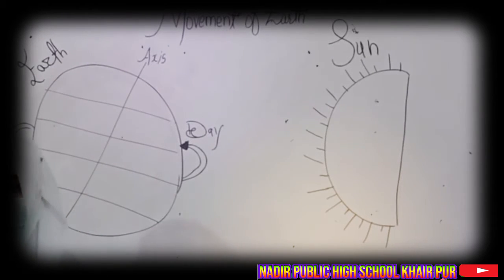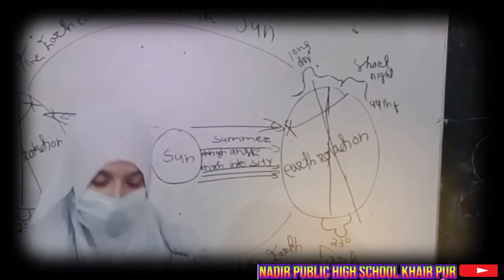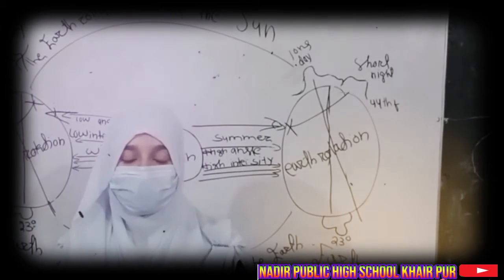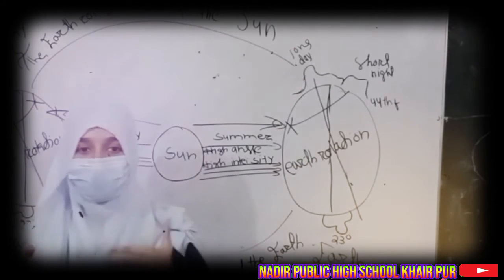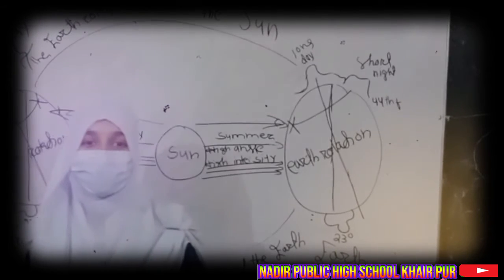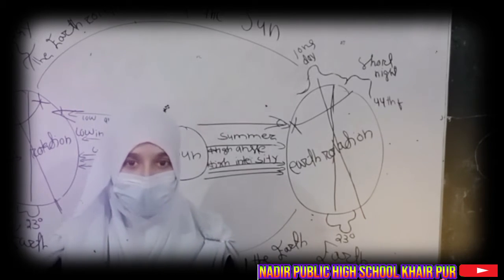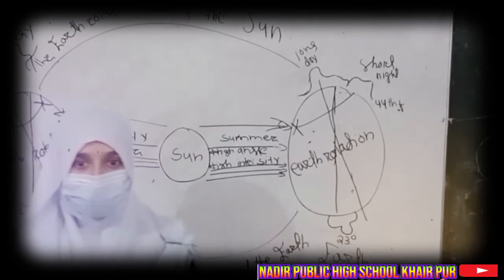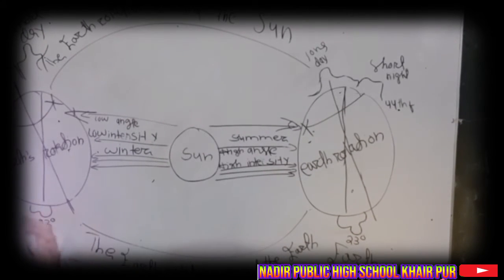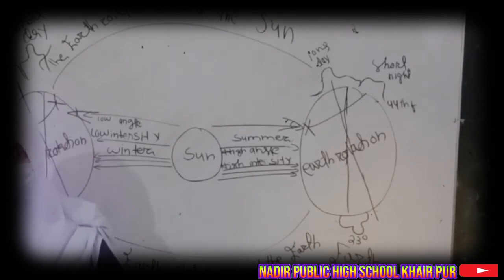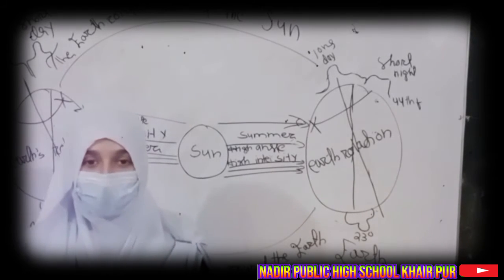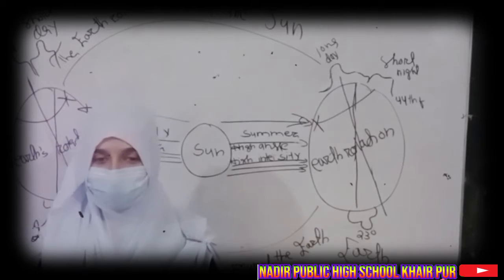On 21st June, the Northern Hemisphere is tilted toward the sun. The rays of the sun directly fall on the earth, and as a result these areas receive more heat. The days are longer than the night — this position is called summer solstice. On 22nd December, the Tropic of Capricorn is tilted toward the sun, nights are longer than the day, and this position is called winter solstice.